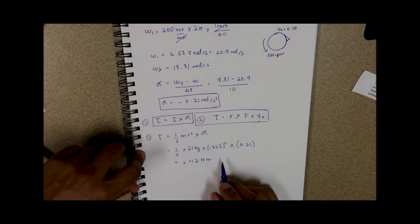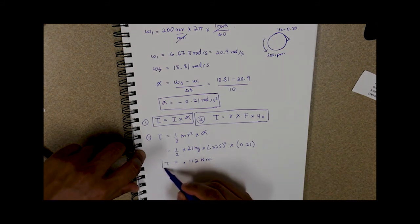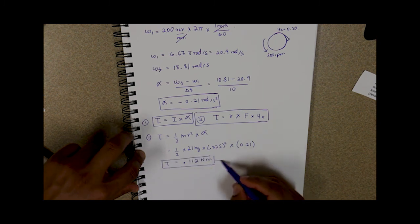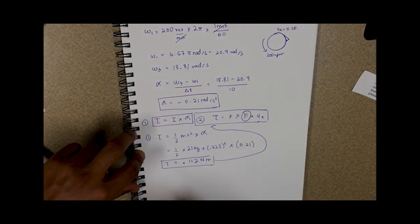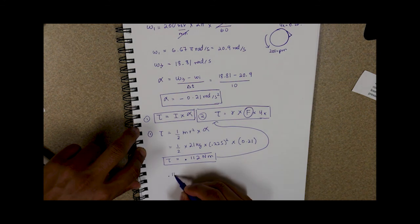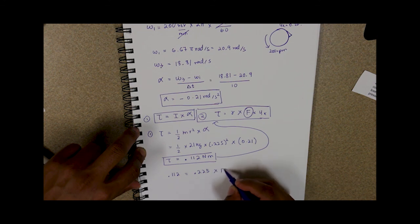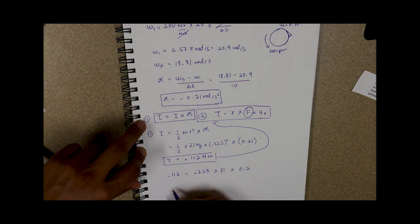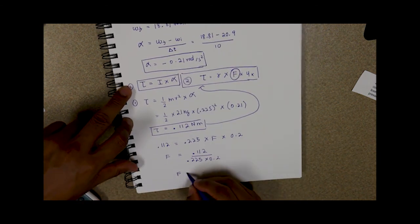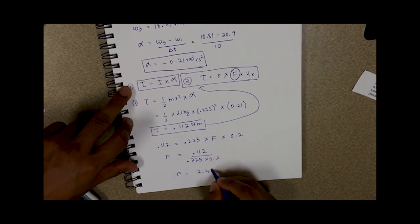So we found out what our torque is, now we can plug our tau or our torque value into the second torque equation to find our force, this is what we're after. So we can do 0.112 which is our torque times the radius which is 0.225 times our force which we're trying to find out times the coefficient of static friction which is 0.2. Now if we just do algebra we can solve for our force, and that force comes out to be 2.48 newtons.